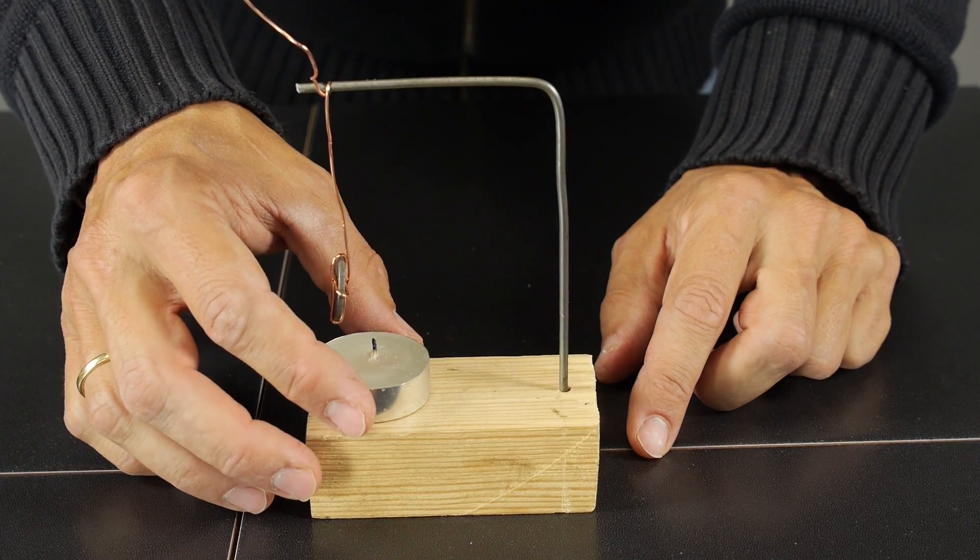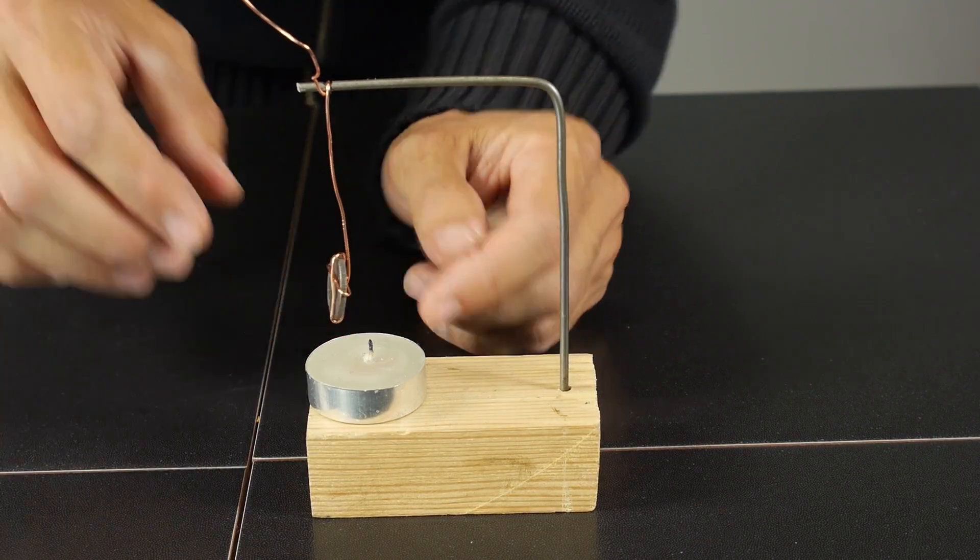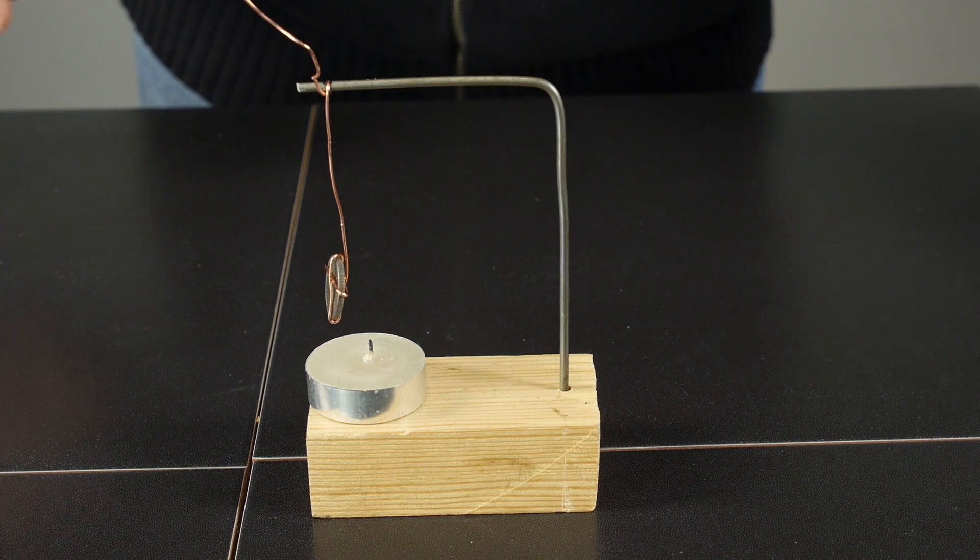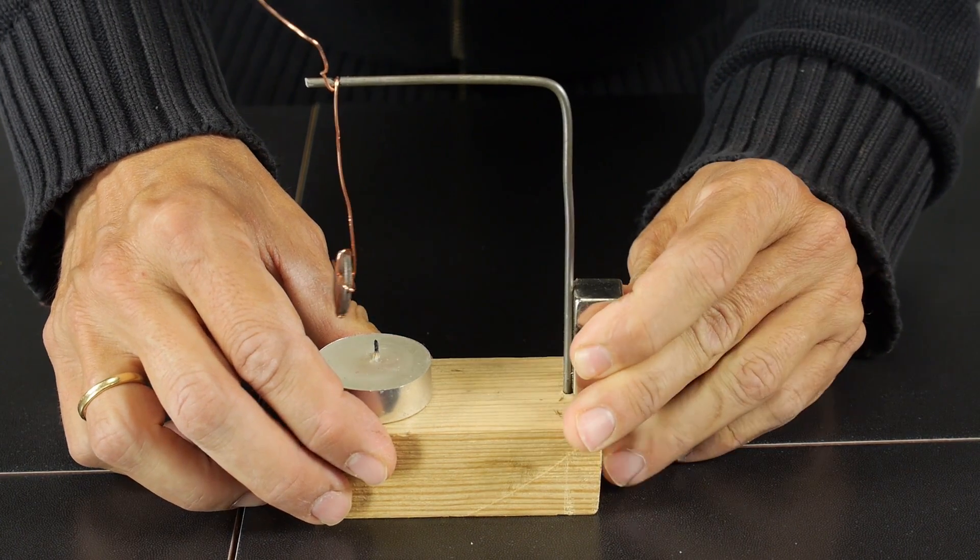We have to put a candle to heat the coin. So we have to calibrate the height of the pendulum from the candle and the magnet we put here.